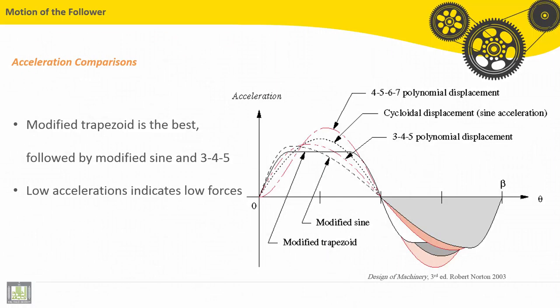Let's see here a comparison for different types of functions: acceleration, velocity, and jerk. Let's start by the acceleration comparison. In this graph we can find many types of acceleration graphs.